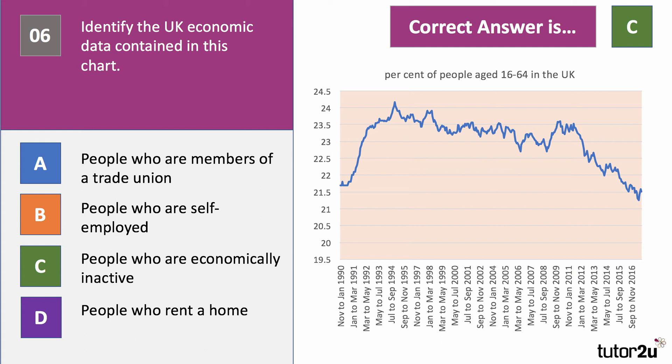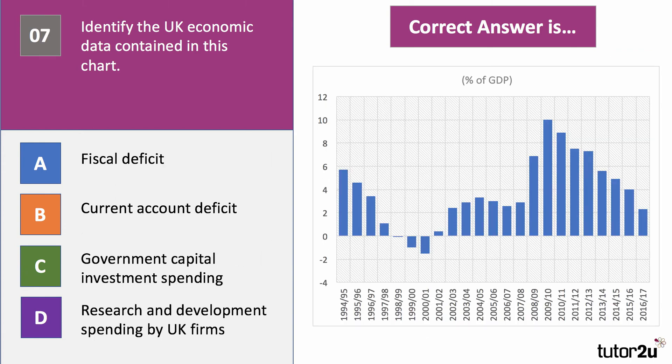Chart seven: identify the data contained in this chart, expressed as a percentage of GDP. Is it the fiscal deficit, the current account deficit, government capital investment spending, or research and development spending by UK firms? All data expressed as a share of GDP. What do you think for chart number seven? Have a go.